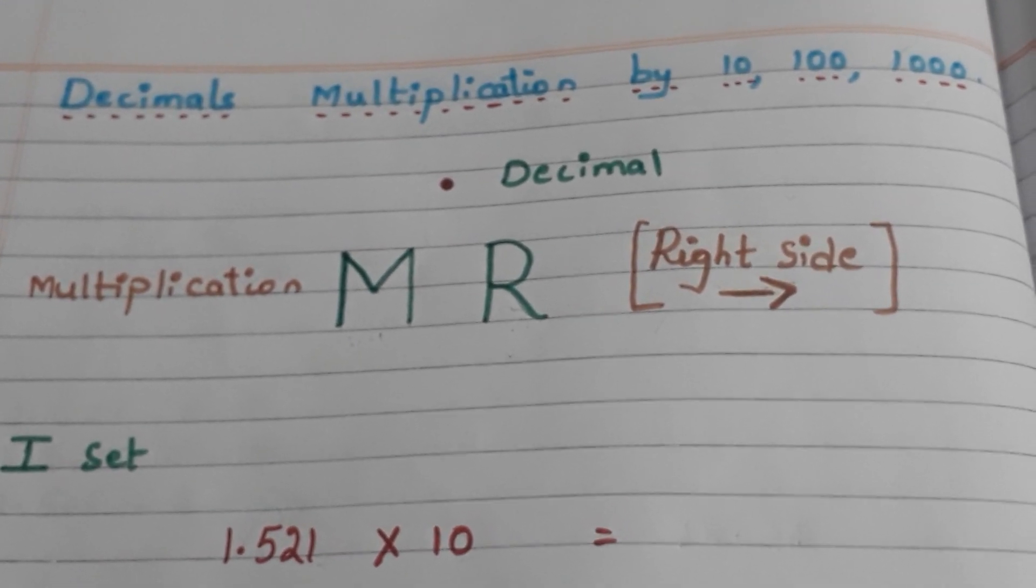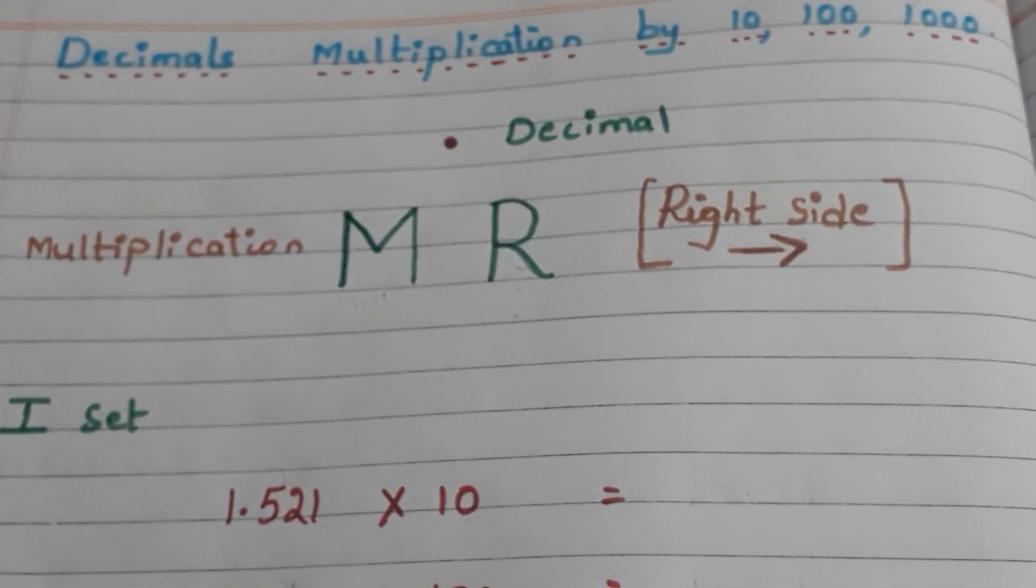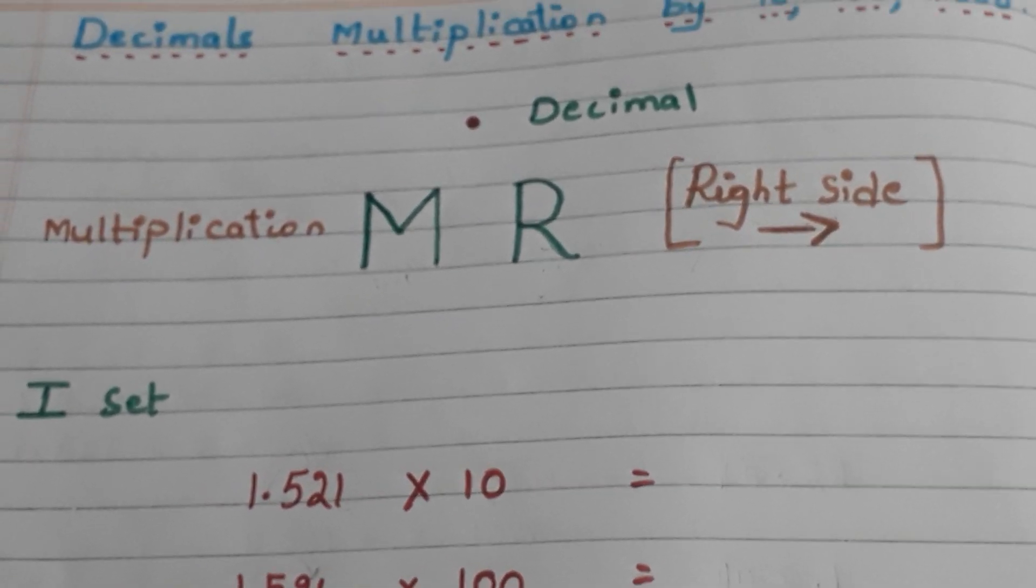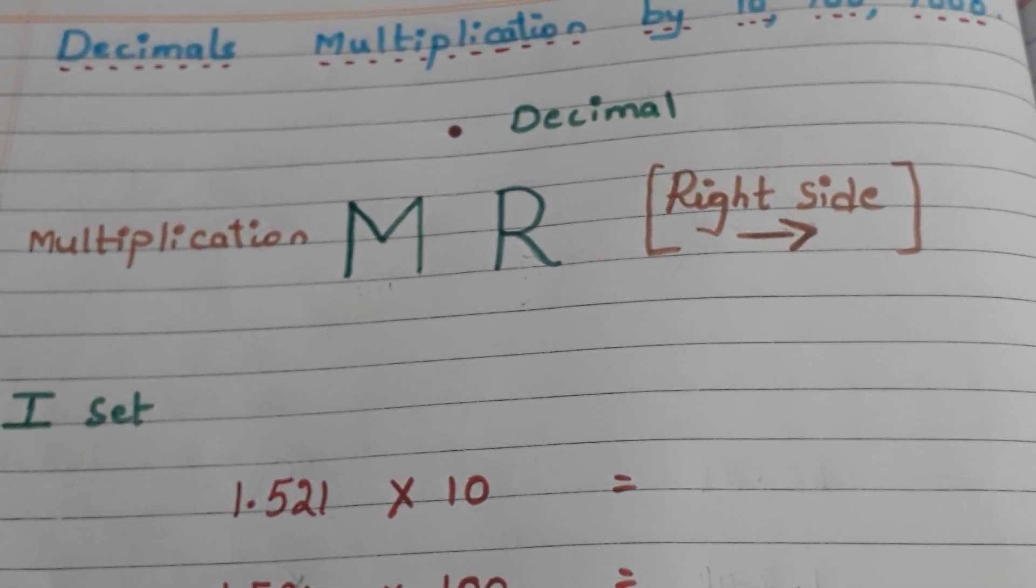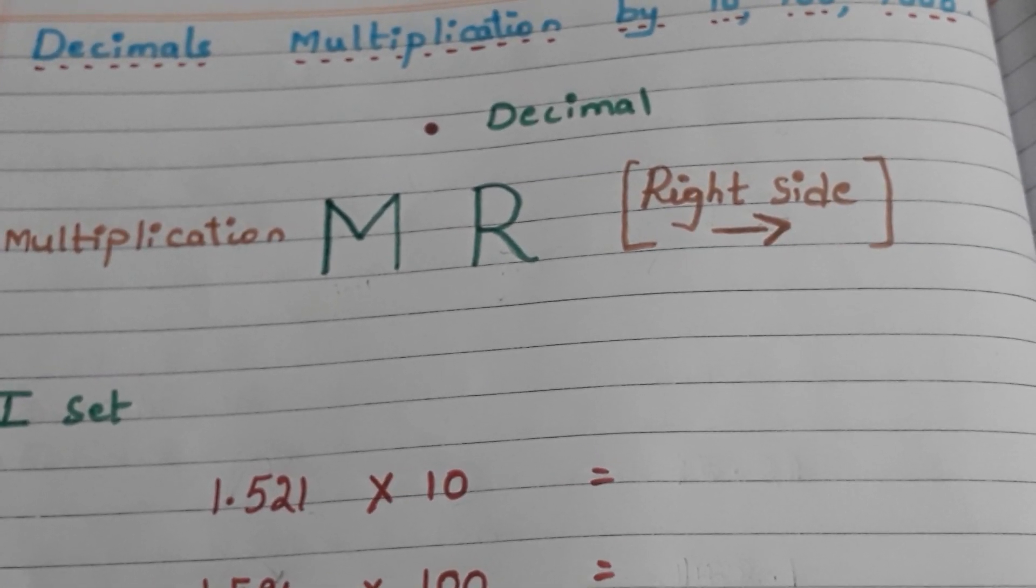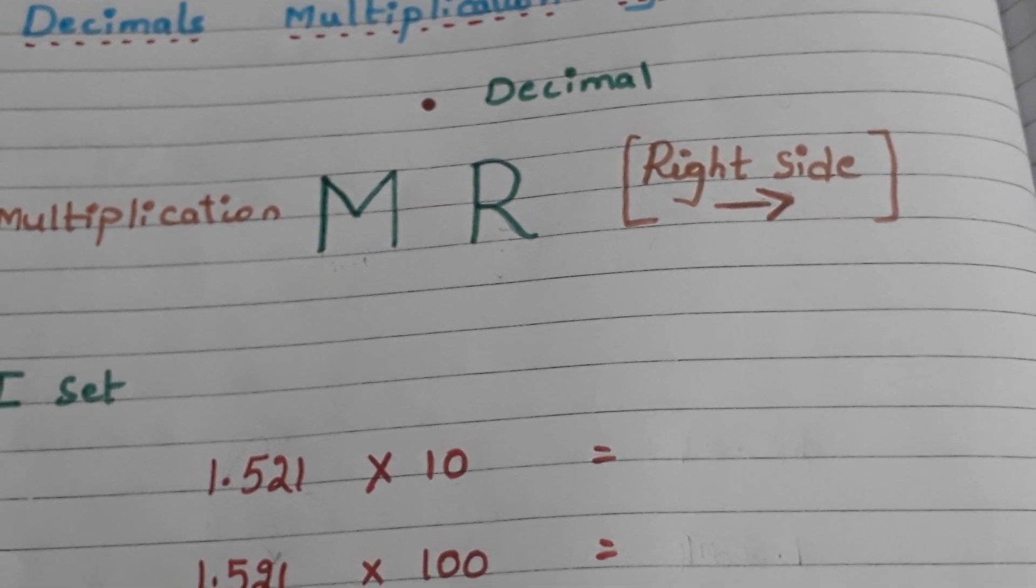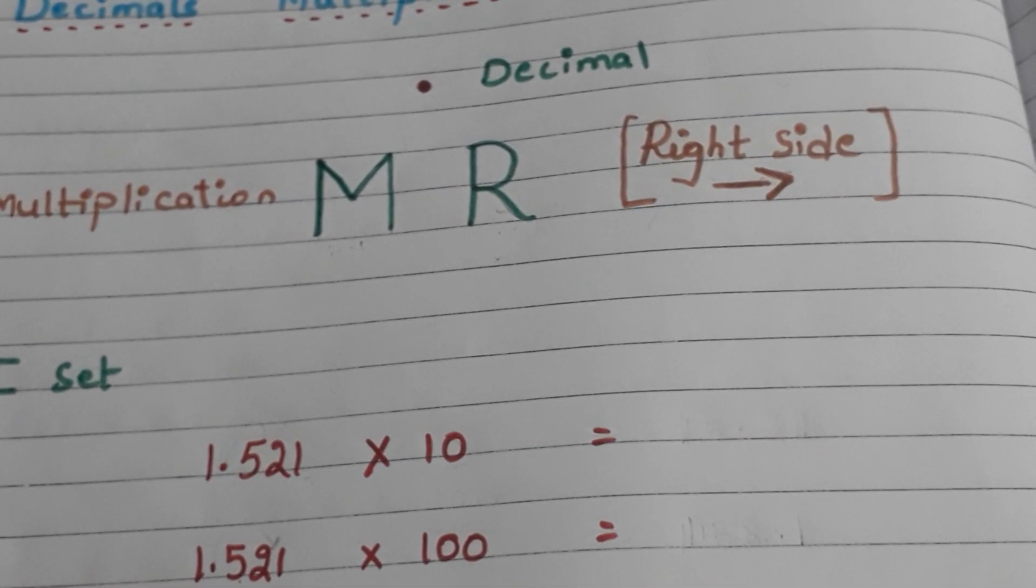So let's get started. Generally these type of questions children will get in fill in the blank section or match the following section. Multiplying the decimal with 10, 100, or 1000 means moving the decimal to the right side based on the zeros in the multiplier.